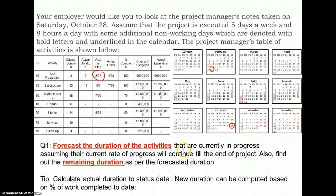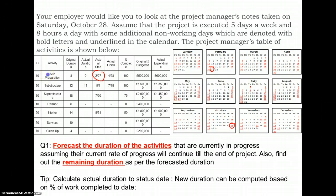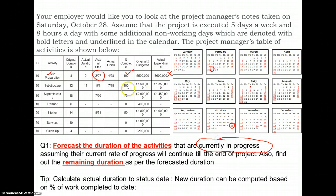The first question being asked is: forecast the duration of the activities that are currently in progress, assuming their current rate of progress will continue till the end of the project. Given a uniform rate of progress, we are asked to estimate how long the activities in progress would take to finish and find the remaining duration. We first need to see which activities are currently in progress. The first activity, site preparation, started on 27th of February and has already been completed 100%, so it is of no interest. The substructure activity is also already finished on 18th of July, so again it is of no interest.